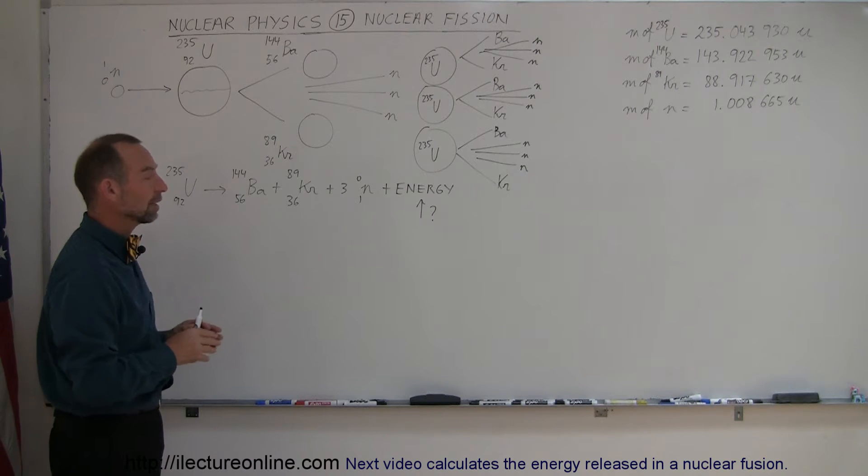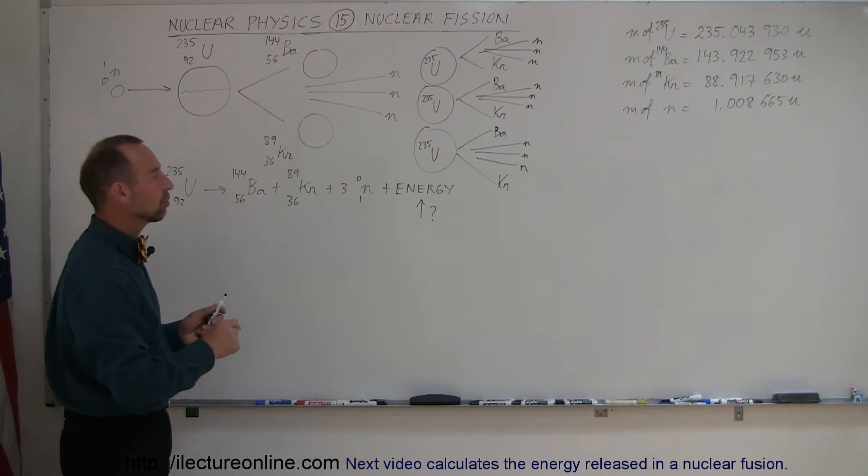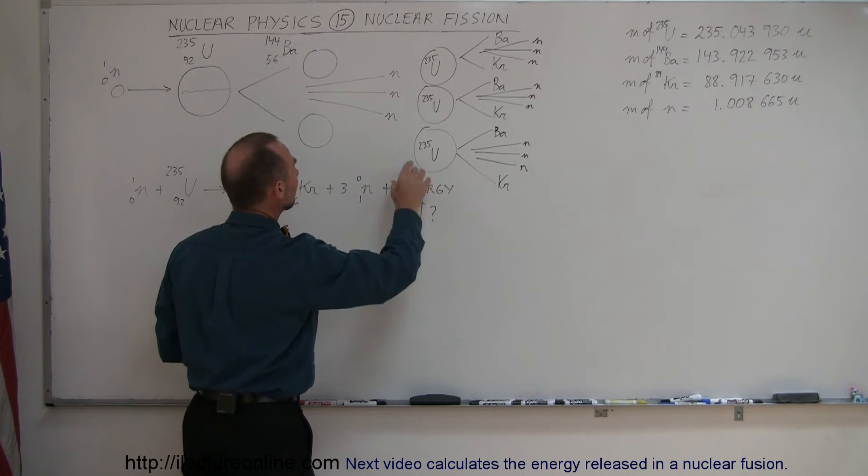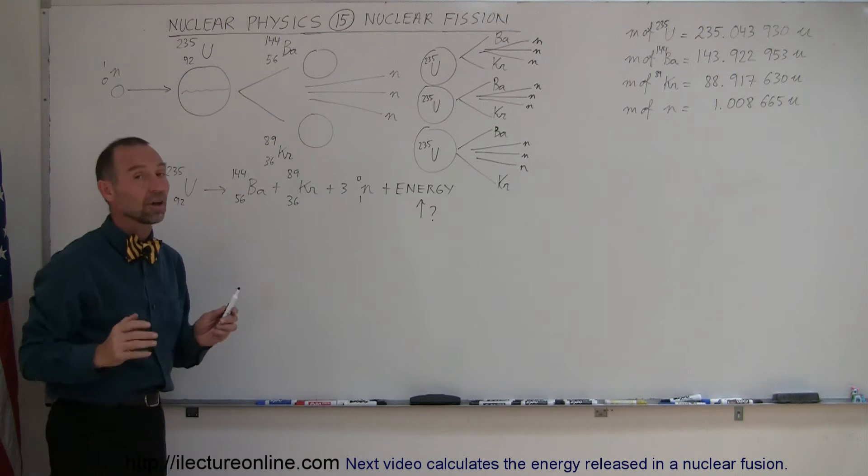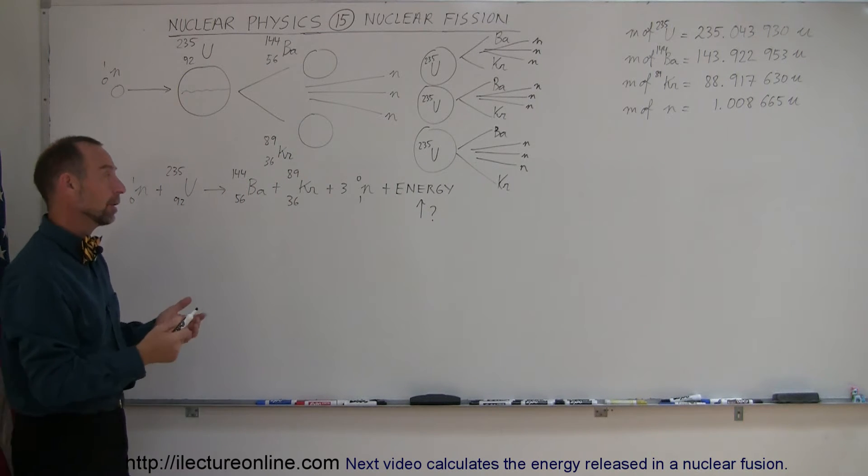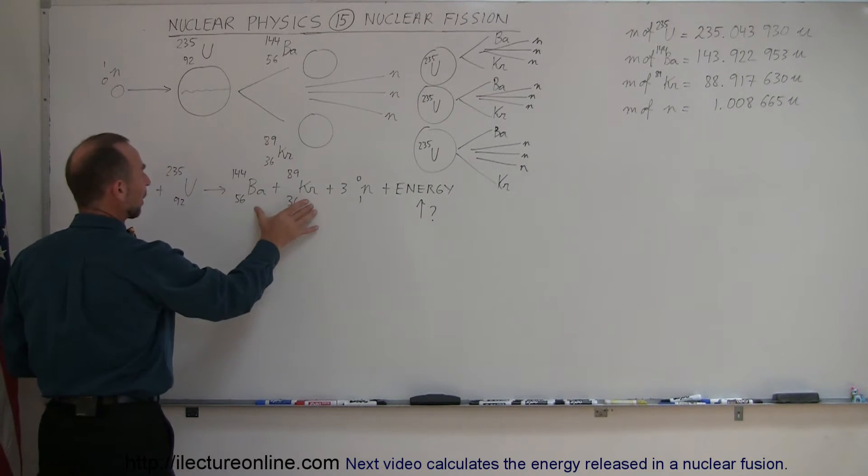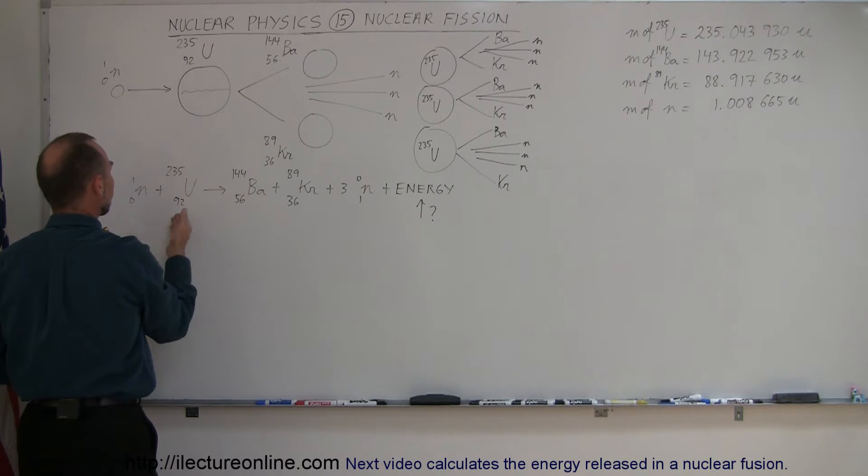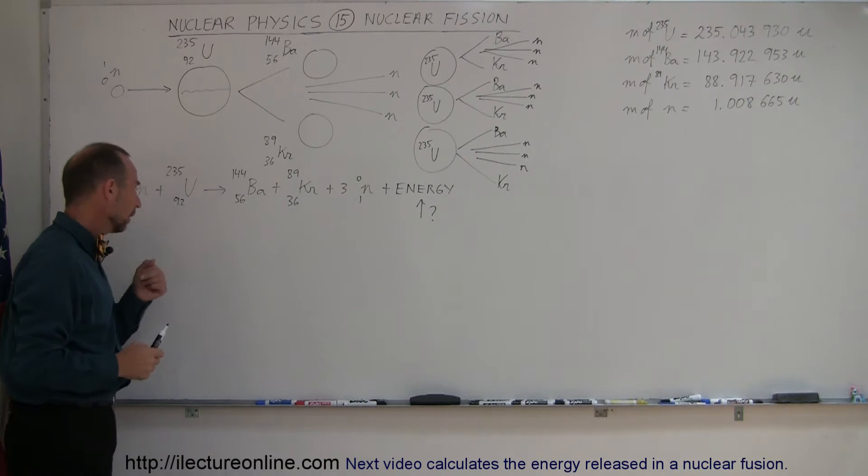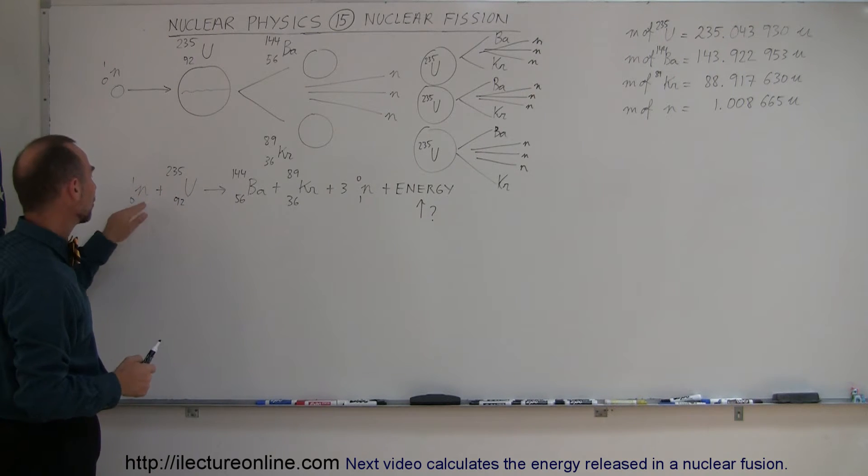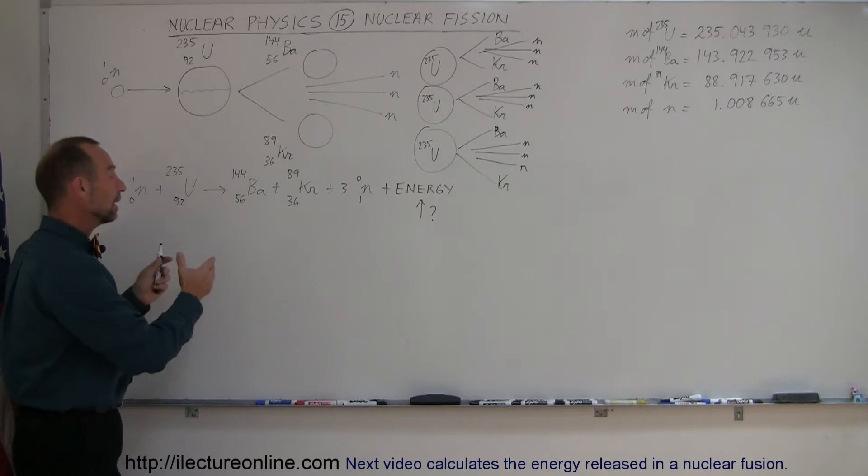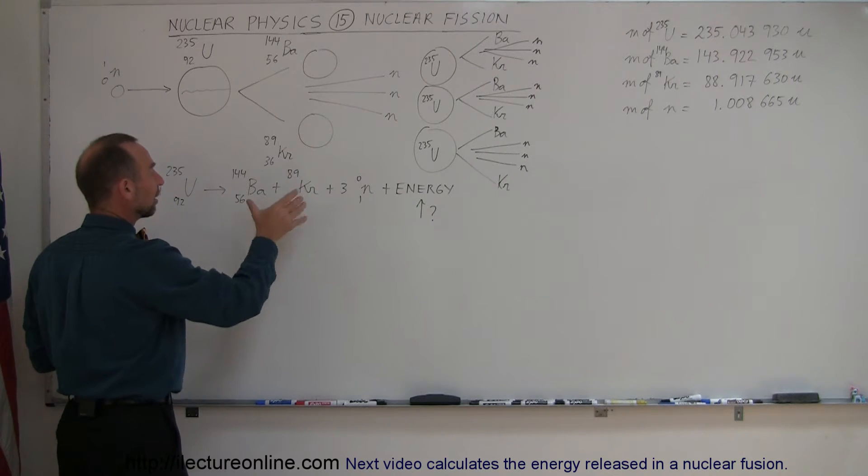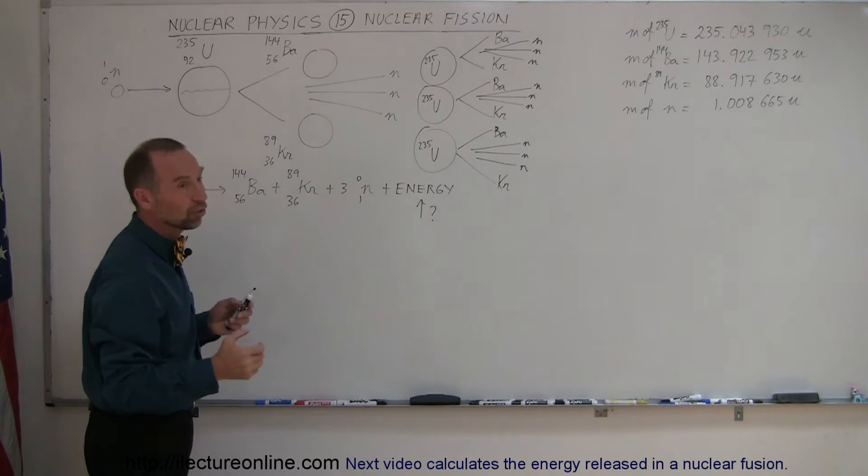So, what we're going to do here is look at the actual reaction and try to figure out how much energy is released in a single one of these reactions. Again, where does that energy come from? The assumption is that the daughter products, if you add the masses of the barium, the krypton, and the neutrons that are released and compare that to the initial mass of the uranium-235 and the neutron that's imparted upon it, then obviously there will be a difference in the mass, and that difference in mass will then be converted to energy using the equation E equals mc squared.